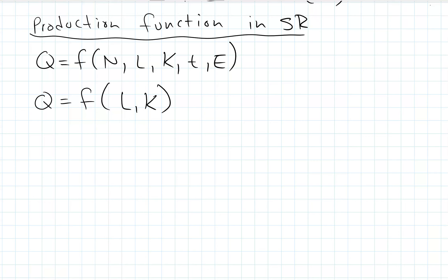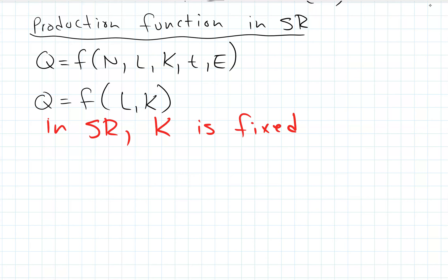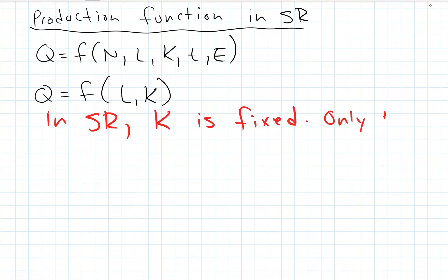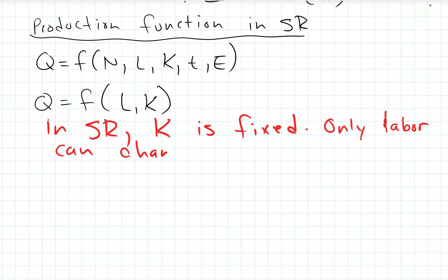In the short run, our capital is fixed. Capital is fixed because in the short run we can't change, for example, the size of our building or the amount of machines we have, because we'd have to shut down our business to install new machines and get them up and running. So in the short run, we assume capital is fixed, and in this simple model only labor can change. If we want to produce more, we have to add more workers.